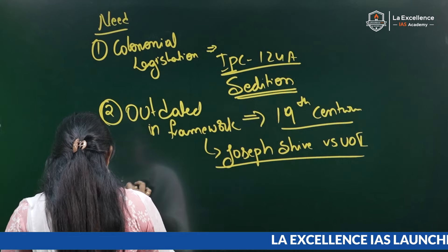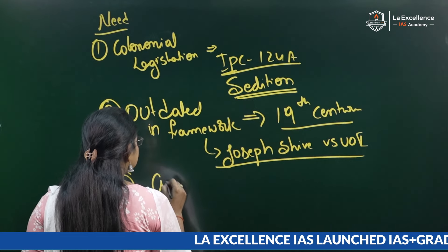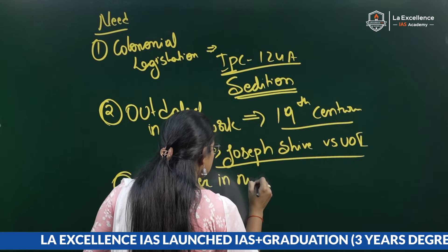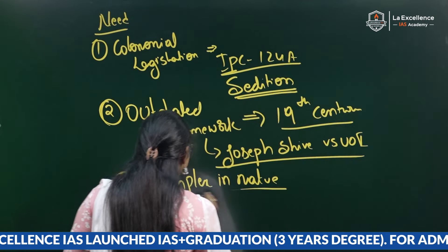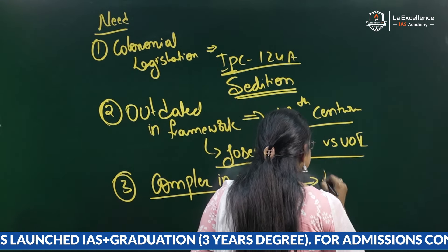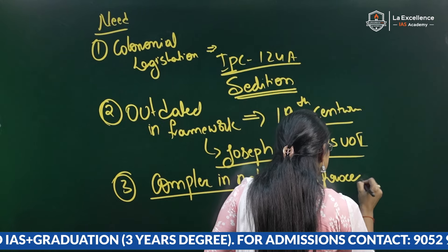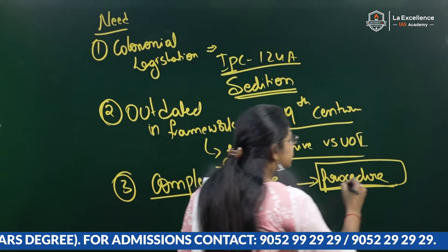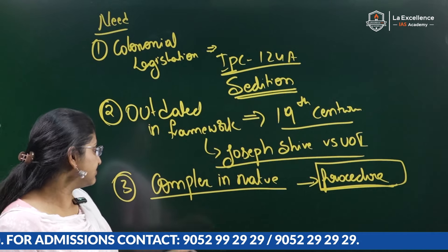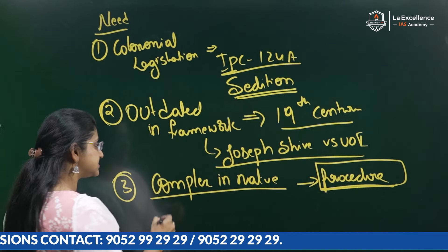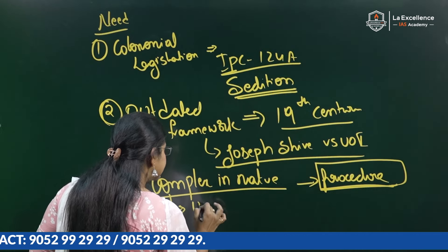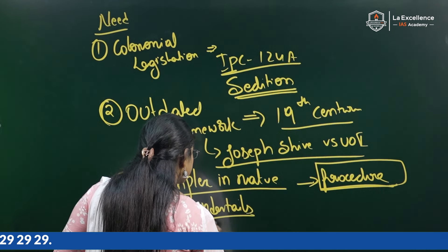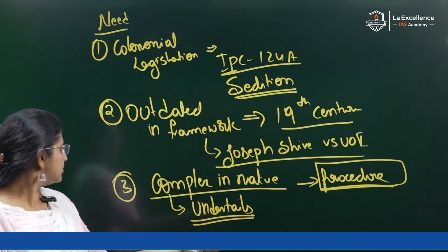The third reason is that these laws are complex in nature. Most of them focus on procedural technicalities and give more importance to procedure rather than delivering justice in the first place. We have seen many under-trials happening as a result, and for this reason we need to change the laws.